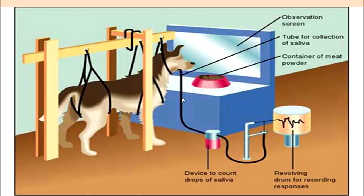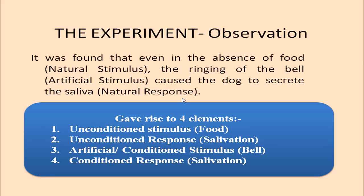In the experimental setup you can see there is a dog, an observation one-way screen, a tube for collection of saliva, a container of meat powder that was served to the dog, a device to count the drops of saliva, and a revolving drum for recording the response. The experimental observation found that even in the absence of food, which was the natural stimulus, the ringing of the bell — the artificial stimulus — caused the dog to secrete saliva, which was a natural response.